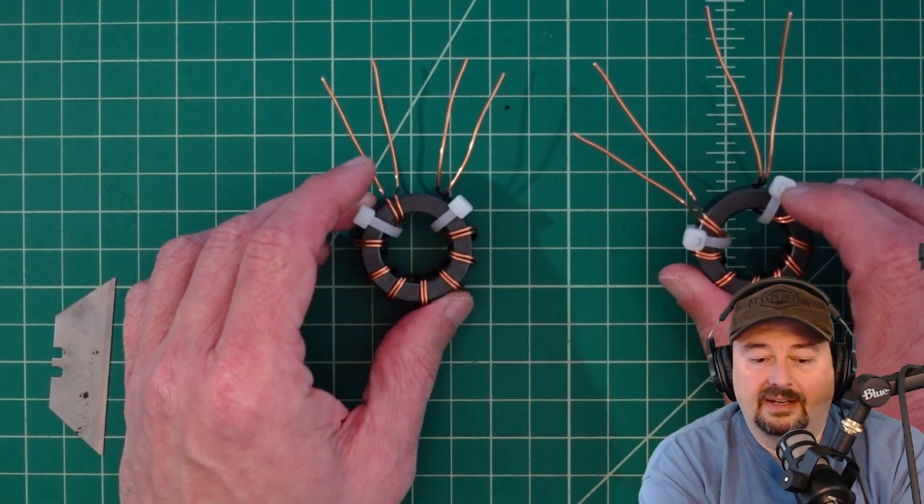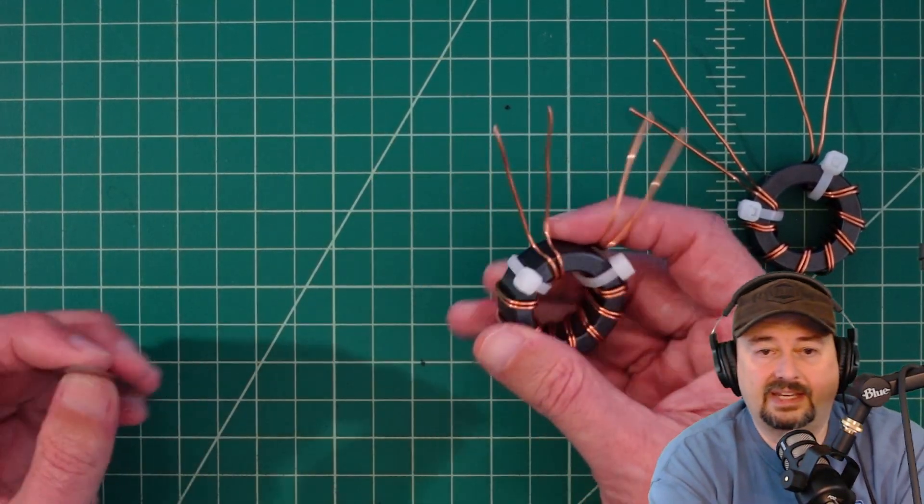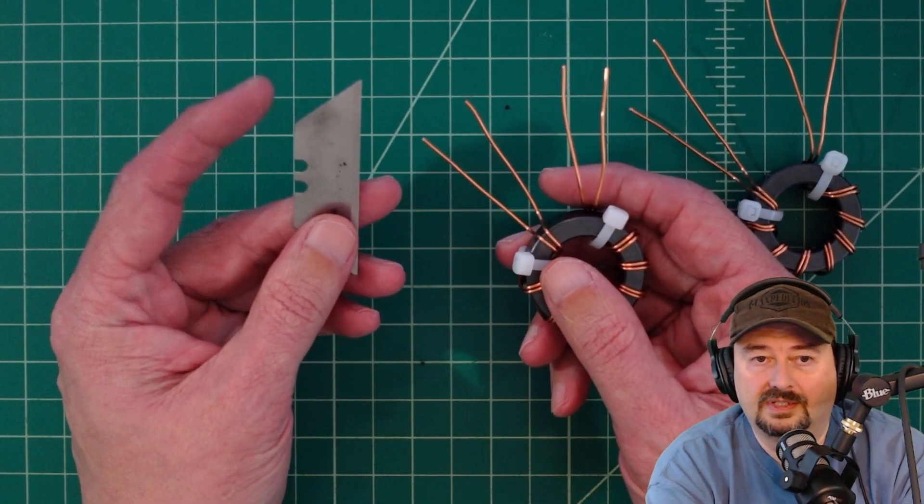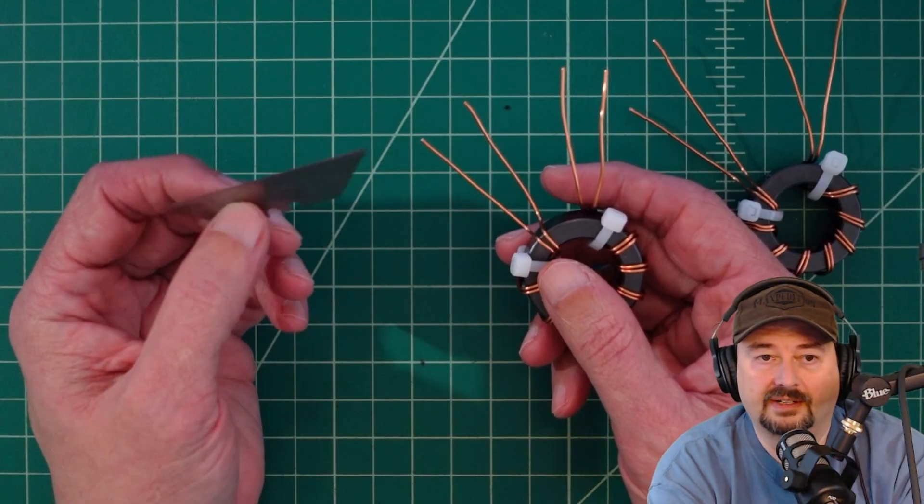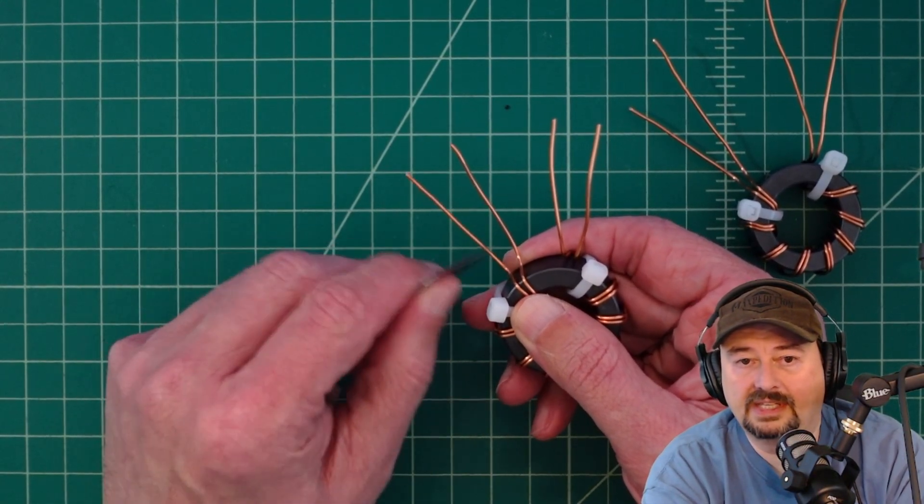One of the things I really hate about enamel wire is that you need to scrape the enamel coating off. What I always use is just a regular old box cutter type razor blade and then I just scrape this down.